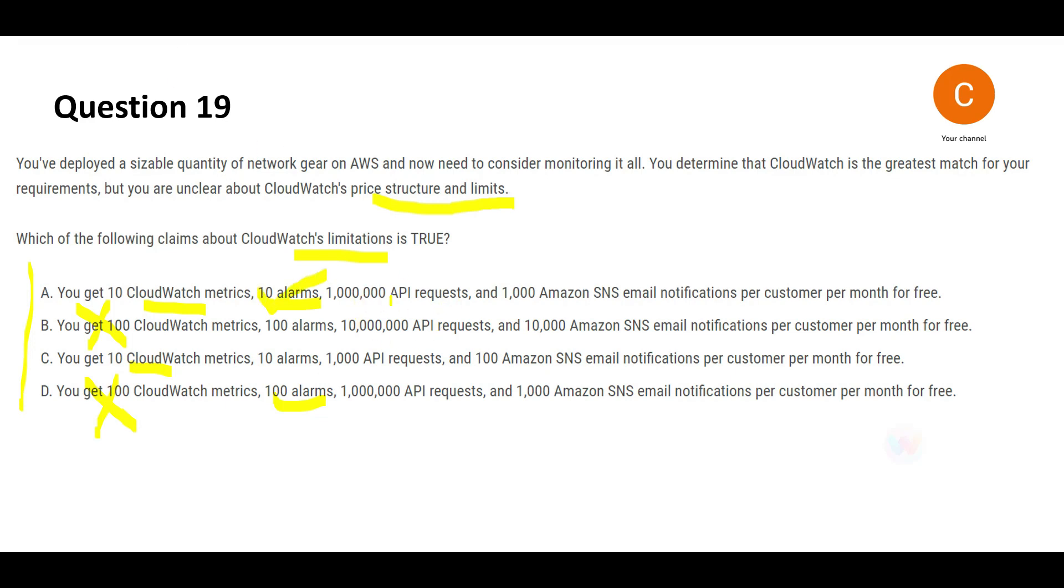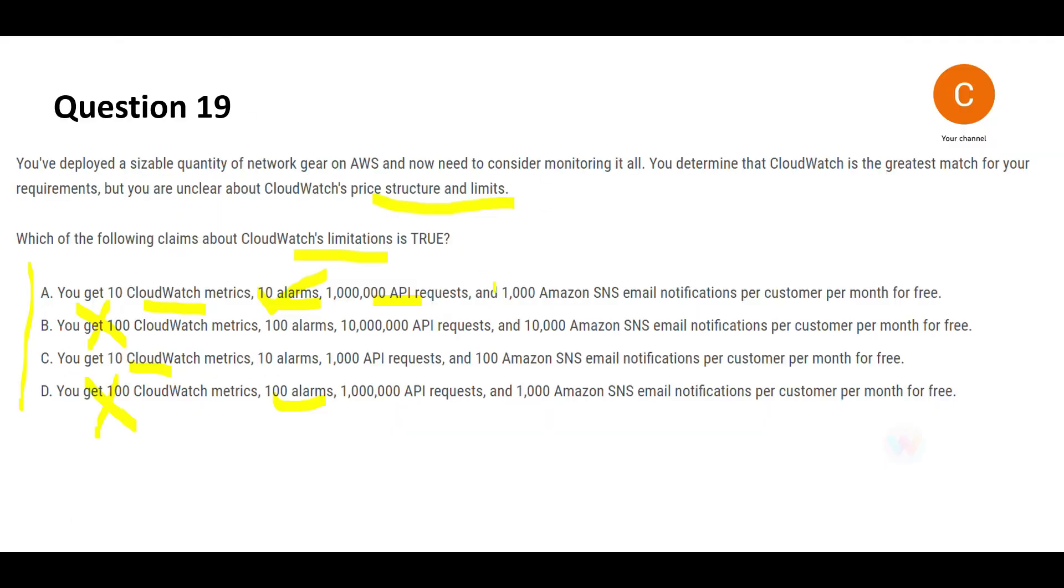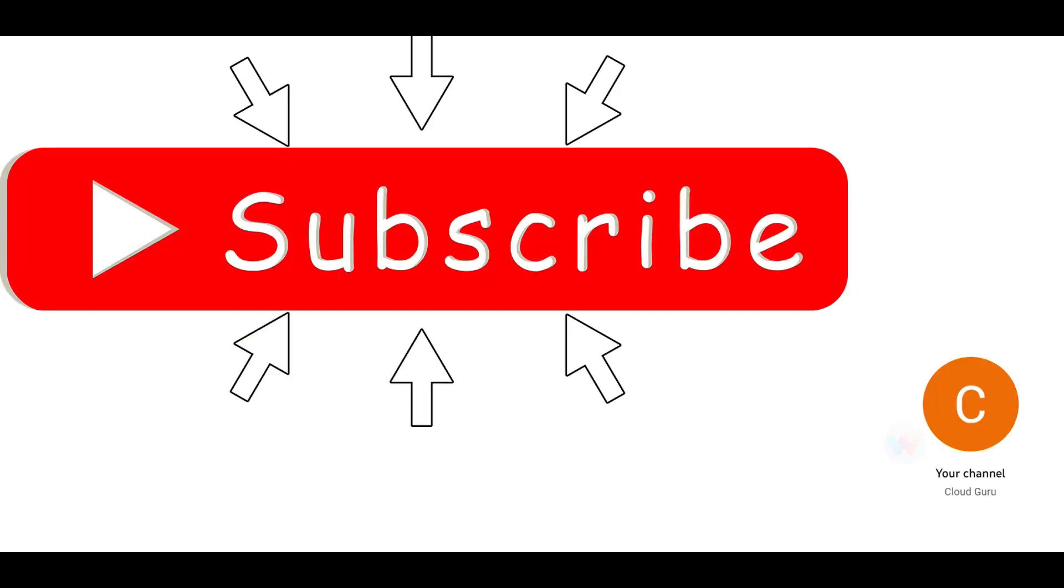It also says 1 million API requests, which is specifically RAM. So this first time trial gives you 1 million RAM events per account. Those are synonymous to 1 million API requests, and hence this would be my answer.